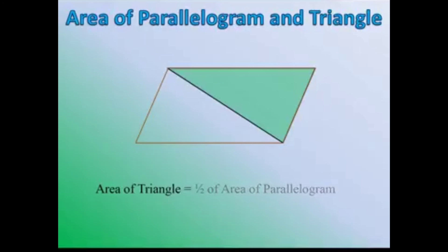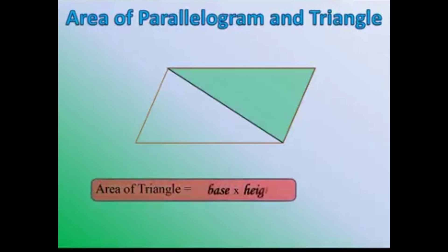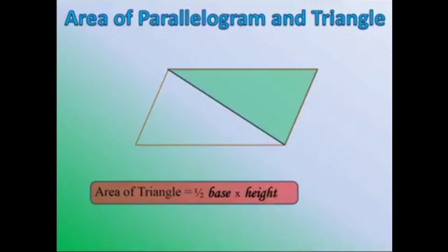B is the base of the parallelogram and H is the height of the parallelogram. So the area of a triangle is equal to half into base into height, where B is the base of the triangle. Hope all of you understood how to find out the area of a parallelogram and triangle. Thank you.